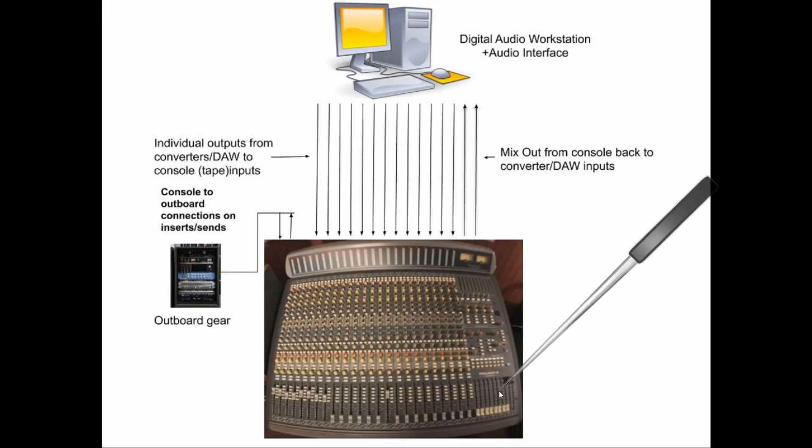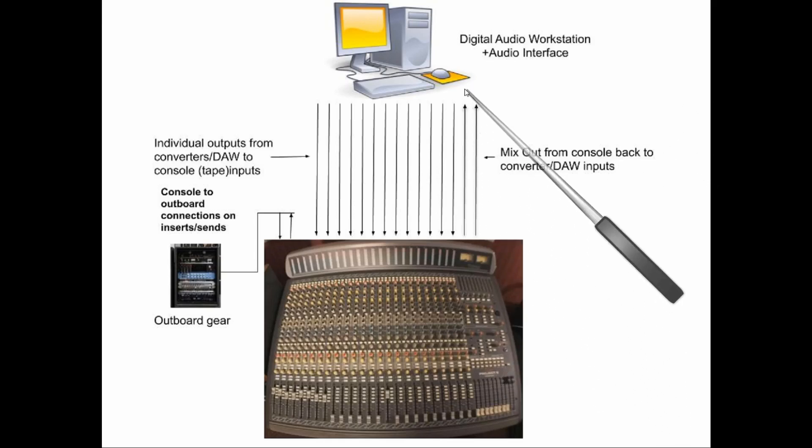You could put compressors on the subgroup and use that to do all different kinds of parallel compression on the console before the mix is sent back into your converters to print your final mix. Another common element in hybrid studios is using really nice mic preamps — preamps with a vintage sound, transformer inputs, and things like that — to color the sound on the way into the converter, so you get that analog preamp character printed into the computer with the sound.